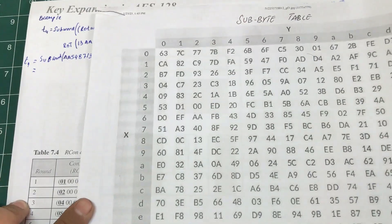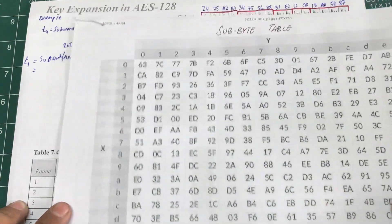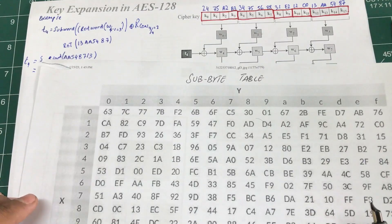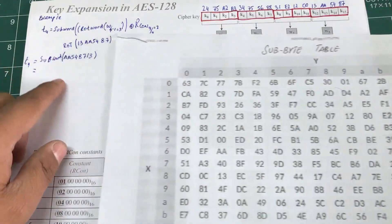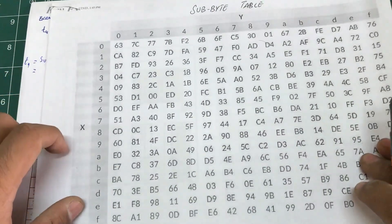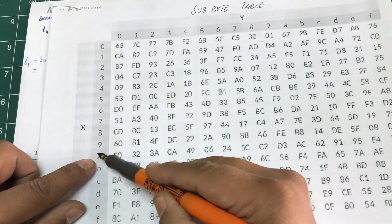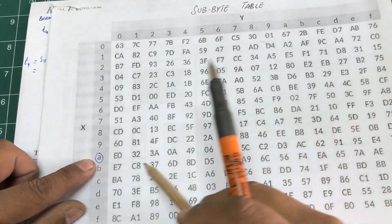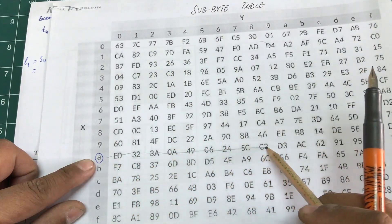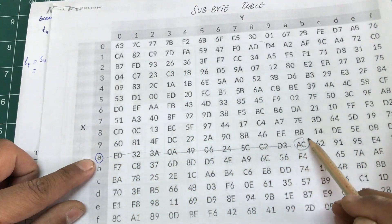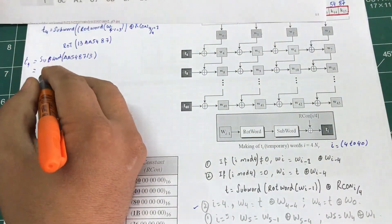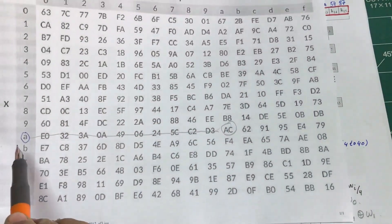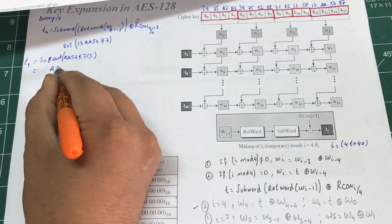The first byte is AA. So the first transformation we're doing is AA. We navigate the S-box table — go to row A, column A. AA according to this table becomes AC.